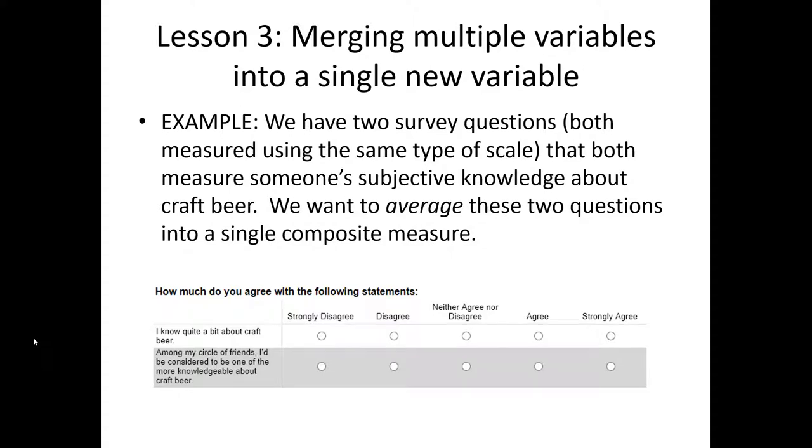Notice how these are both about someone's self-perception of how much they know about craft beer, but they tap into slightly different ideas. It might make sense for us to average their score together here to get an integrated subjective knowledge score.